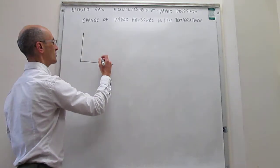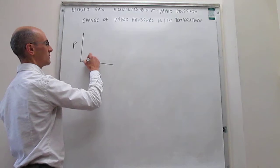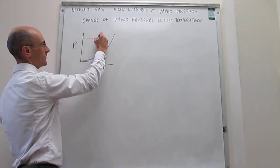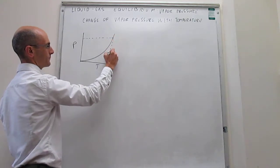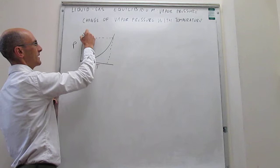So generally, the vapor pressure curves have this shape. This is how the vapor pressure for a particular liquid changes with temperature. And again, there's a magic point in this curve where the vapor pressure reaches the atmospheric pressure.